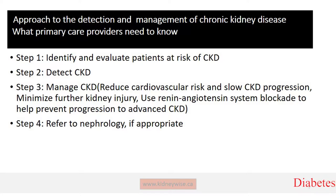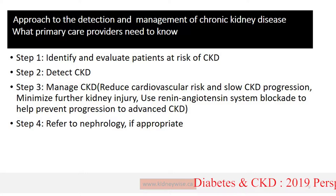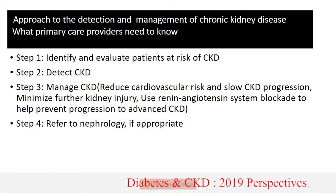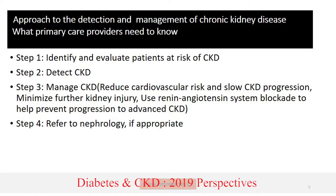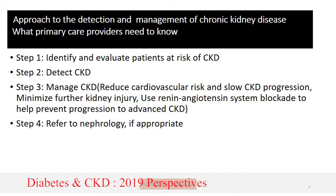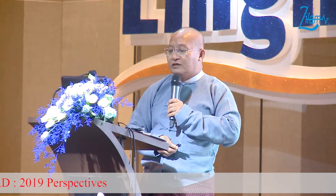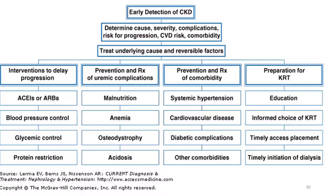I advise all primary care physicians: step one — identify and evaluate patients at risk of CKD in every diabetic patient. Step two — detect CKD. Step three — manage CKD: reduce cardiovascular risk, slow CKD progression, minimize further kidney injury, use renal-protective agents to halt progression, and refer to nephrology when appropriate. Determine the cause, severity, complications, and risk of progression.